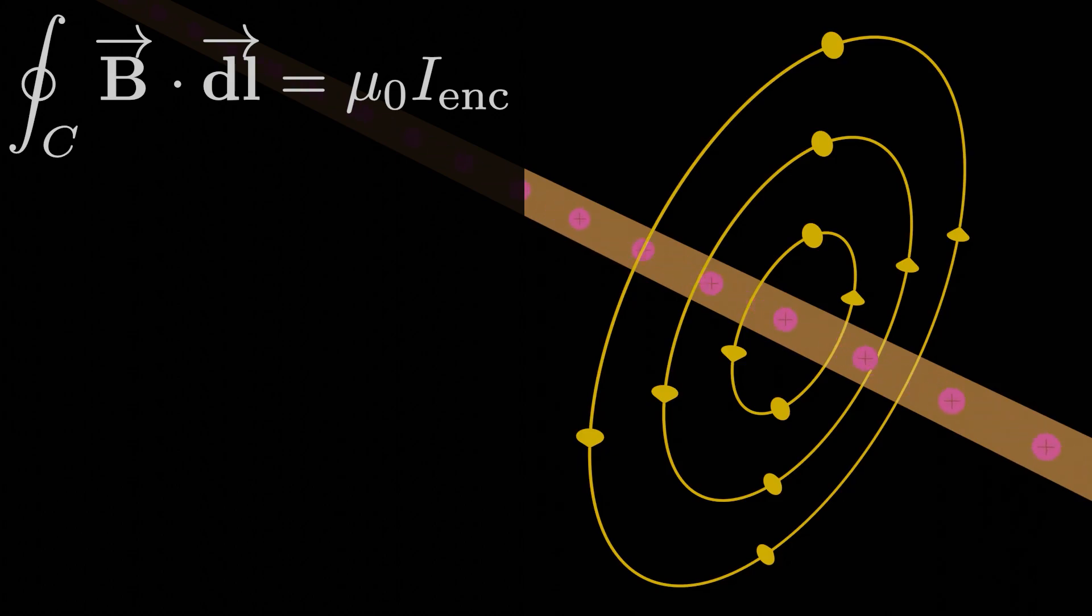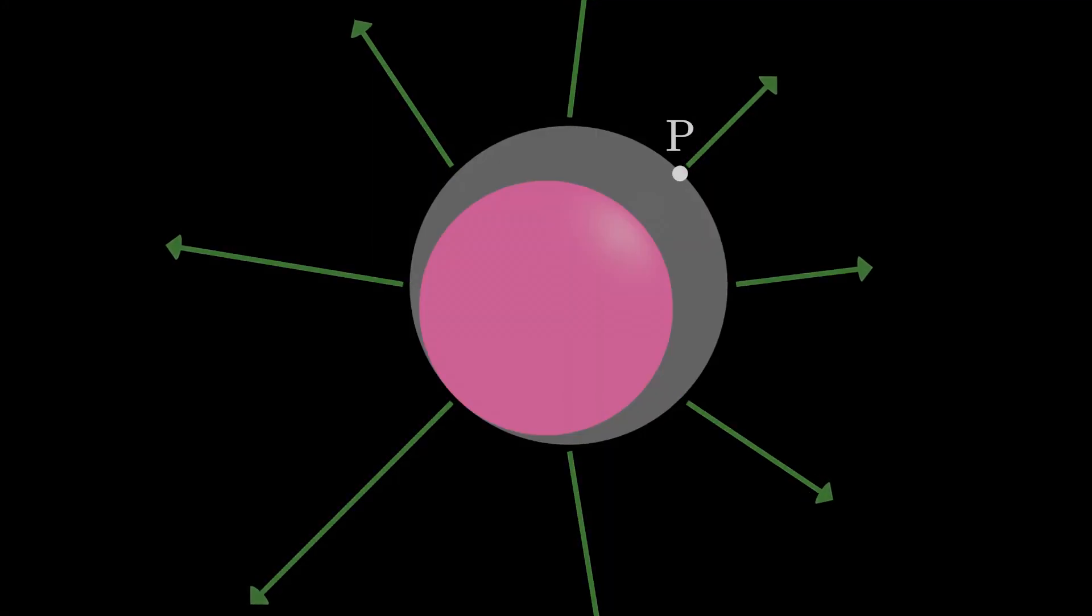When we use Ampere's law, we got a pretty similar deal. We now wanted to find a closed loop before starting, any loop you want. Then, once we've decided on our loop, we apply Ampere's law to determine the circulation of the magnetic field, or B dot DL, around this loop. Now the question is, how do we know what loop to choose? We ran into a similar issue with Gauss's law. How did we know which surface to choose?